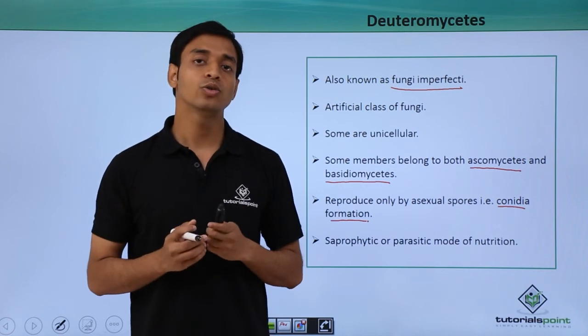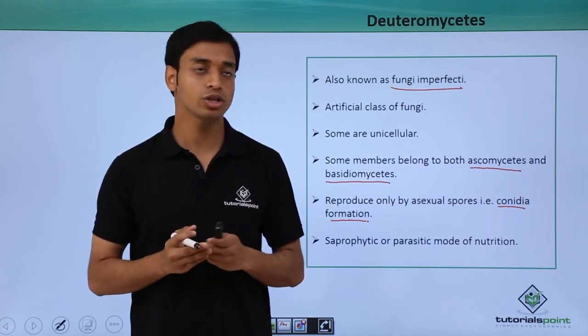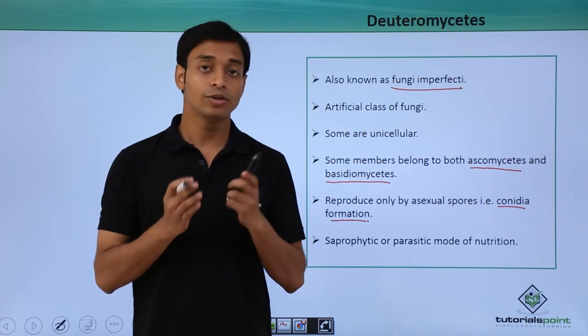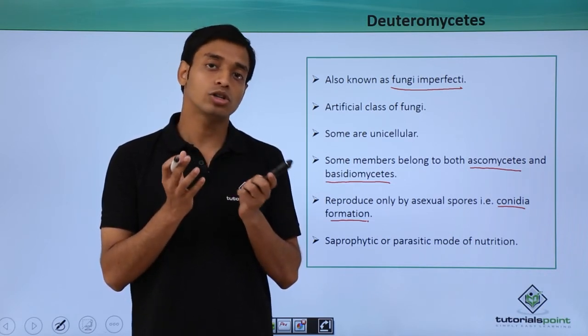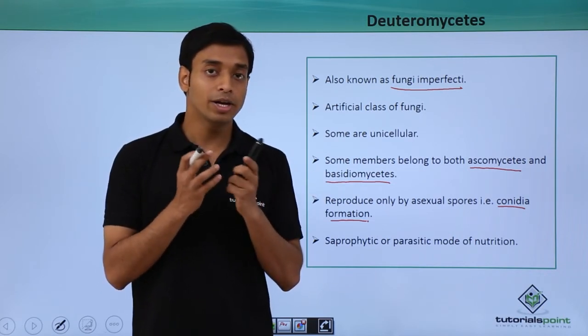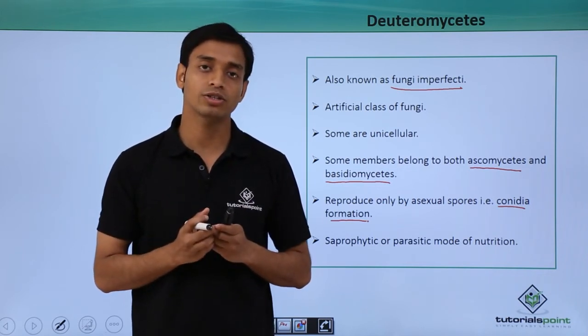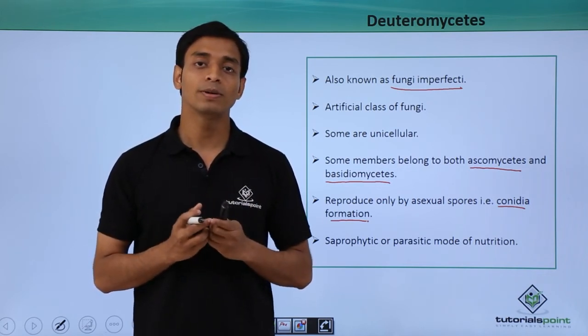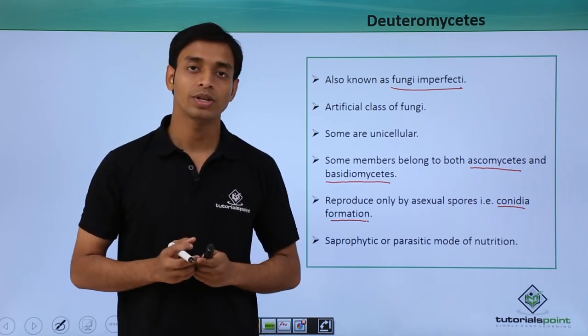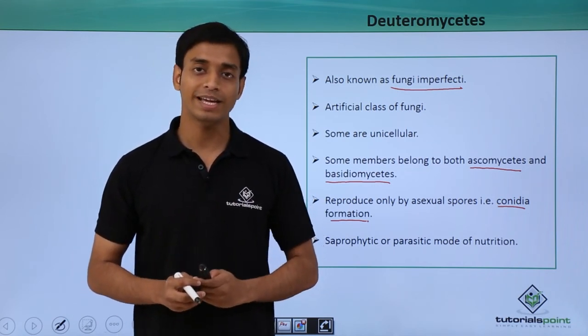In this video, we talked about the fourth group of fungal classification, Deuteromycetes, also known as Fungi Imperfecti because they do not have the sexual mode of reproduction. We have also discussed some of the important characteristics of this group. I hope you have liked this video. Thank you.